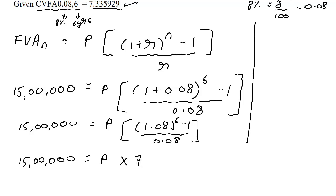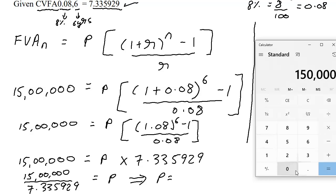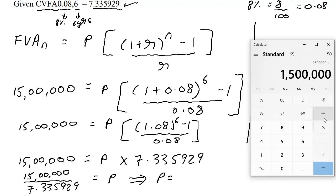So it's 7.335929, and now we solve for P. This entire number on this side is multiplication and goes on the other side, it becomes division, so it's going to be 15 lakhs upon 7.335929. And therefore P is equal to 15 lakhs divided by 7.335929, and you get 2 lakhs 04,473.